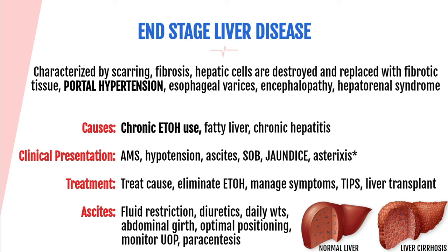The number one cause of chronic liver disease is chronic alcohol use, which destroys hepatocytes and replaces healthy tissue with scar tissue. Other causes include fatty liver disease from obesity or diabetes, or chronic hepatitis. These patients present with altered mental status from hepatic encephalopathy, hypotension, shortness of breath from ascites, jaundice (appearing in the sclera first), and asterixis — when asked to hold out their hands, they exhibit a flapping, tremoring motion due to high ammonia levels.